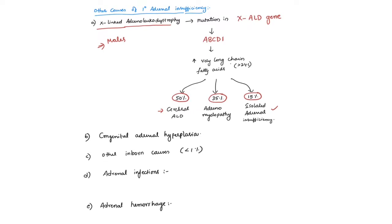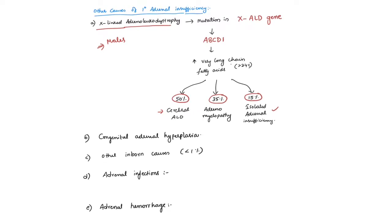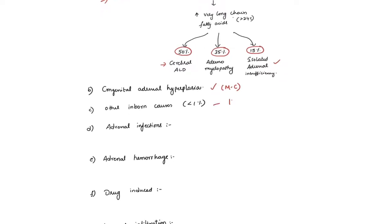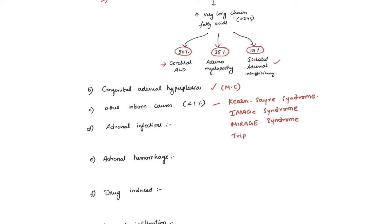The other common genetic reason for adrenal insufficiency is congenital adrenal hyperplasia, which is by far the most common genetic cause. Other inborn causes include Kearns-Sayre syndrome, which is a mitochondrial disorder, MIRAGE syndrome, Triple A syndrome. These are all very rare syndromes that can cause adrenal insufficiency and constitute less than 1%.